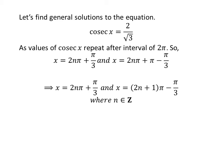Further simplification gives us the general solutions are 2nπ plus π upon 3 and (2n+1)π minus π upon 3.